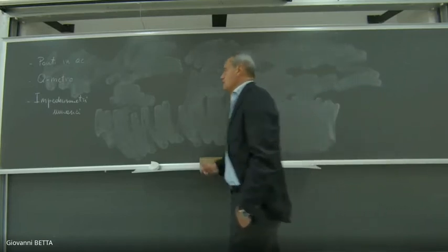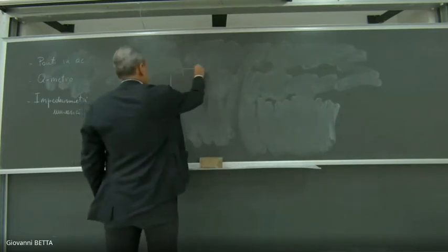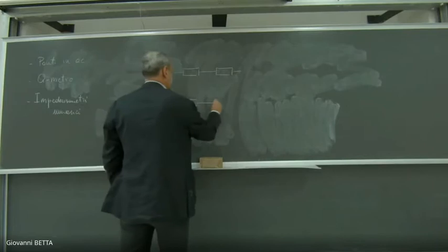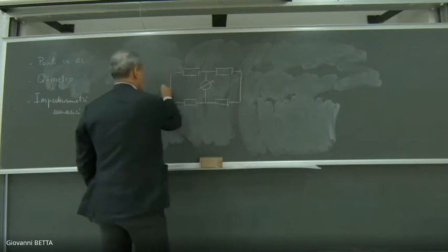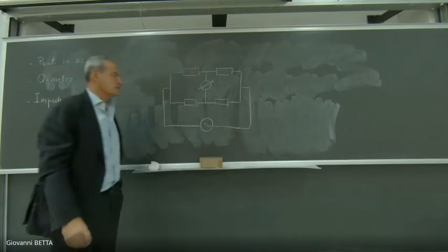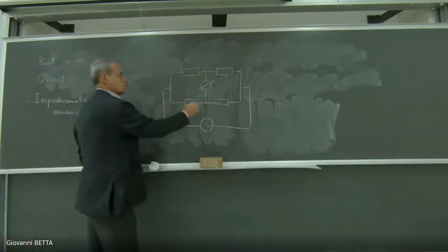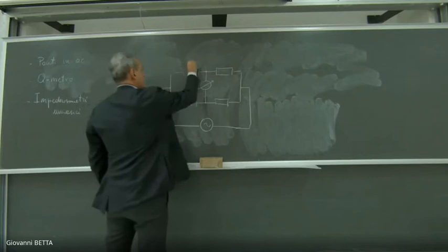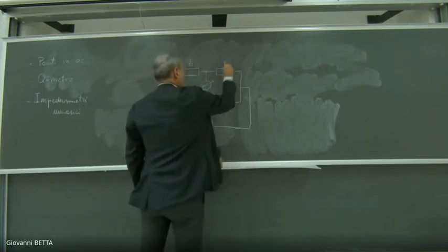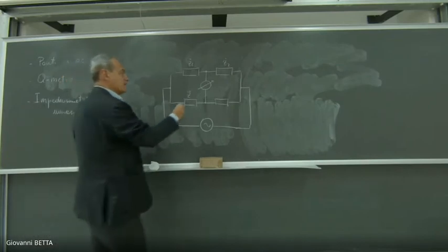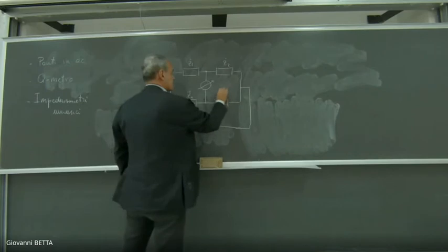Iniziamo dai ponti. Partiamo da una struttura generica di un ponte in alternata, che ricorda molto la struttura dei ponti in continuo. Il ponte ha quattro oggetti collegati in maniera tale da formare un quadrilatero: li chiameremo Z_1, Z_2; in posizione tre andiamo a mettere l'incognita Z_X, e Z_4.